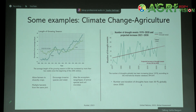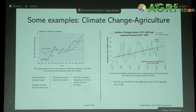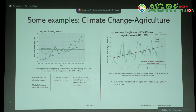The right figure shows the number of drought events from 1970 to 2020 and the projected increase from 2021 to 2030. There is clear evidence that the number of drought events is increasing. This can affect plant growth and development and also put more pressure on irrigation requirements for crop production.